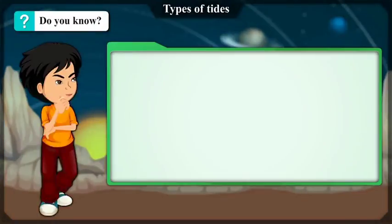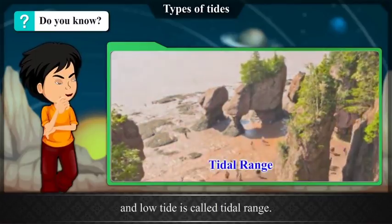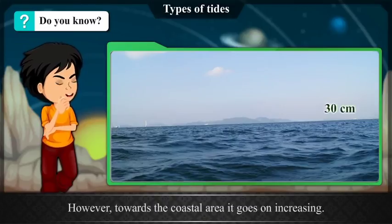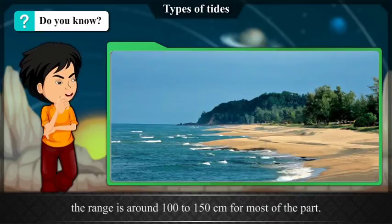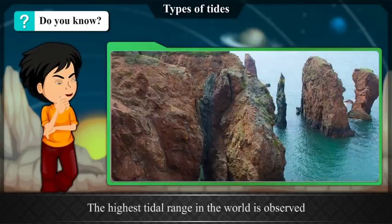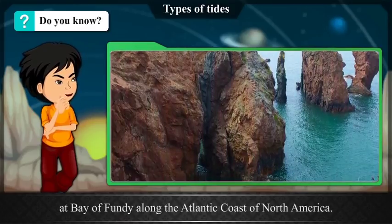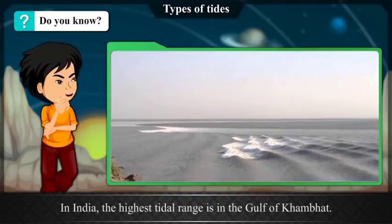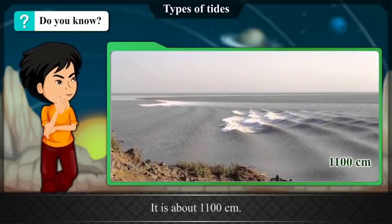Do you know? Intertidal Range. The difference in the water level of the high tide and the low tide is called tidal range. In open seas, this range is about 30 cm. However, towards the coastal areas, it goes on increasing. Along the coast of peninsular India, the range is around 100 to 150 cm for most of the part. The highest tidal range in the world is observed at the Bay of Fundy along the Atlantic coast of North America, where the tidal range is about 1,600 cm. In India, the highest tidal range is in the Gulf of Kambhat, at about 1,100 cm.